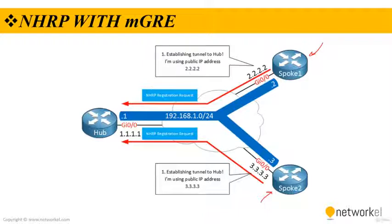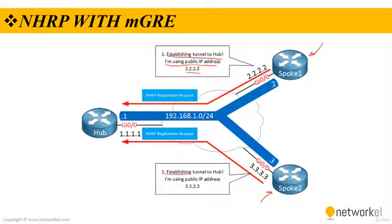The routers use an NHRP registration request message to register their public IP addresses to the hub. As you can see, spoke 1 is establishing a tunnel to the hub using public IP address 2.2.2.2, and spoke 2 is also sending an NHRP registration request message with its public IP address.